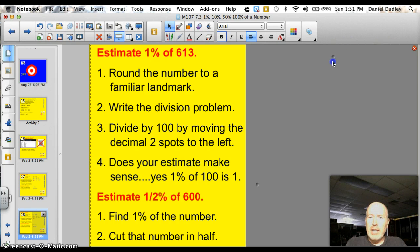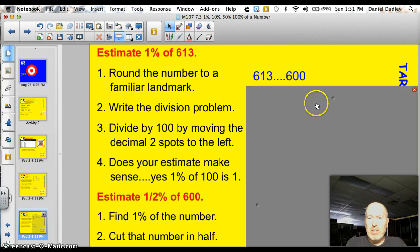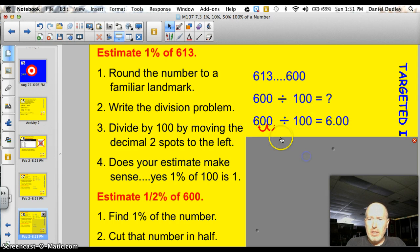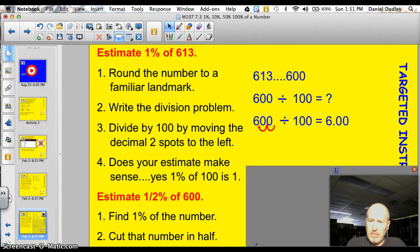Well, let's see how you did. First of all, you should have rounded 613 to probably 600. That made sense to me. So, then I took and I divided 600 divided by 100. I moved that decimal spot two spots to the left, and I found out that 600 divided by 100 is just 6. Now, does that make sense? Well, again, 1% of 100 is 1, so 1% of 600 should make sense.